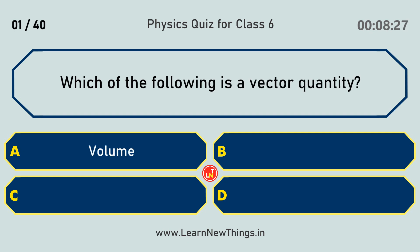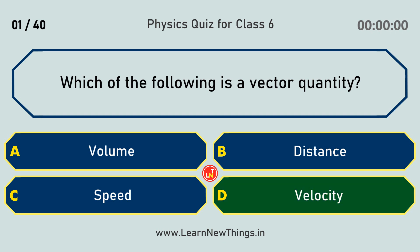Which of the following is a vector quantity? Velocity.